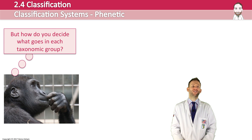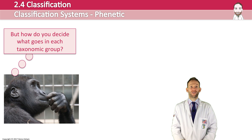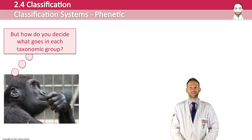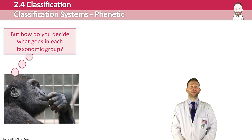How do you decide what goes in each taxonomic group? There are two major classification systems. The first is the phonetic method, which puts organisms into groups based on similarity in morphology — basically what they look like. Linnaeus did this simply by observing and drawing organisms. Now we can use computers to analyse hundreds of features quantitatively and arrange them in detailed diagrams called phenograms.